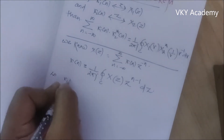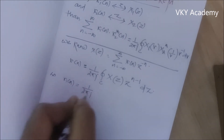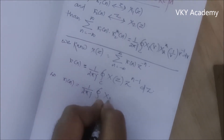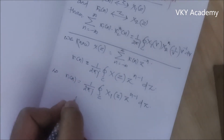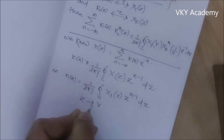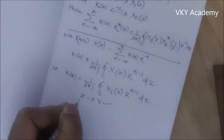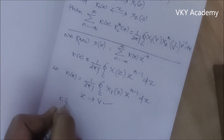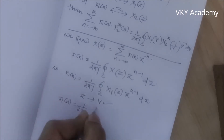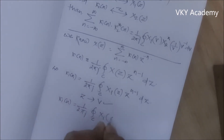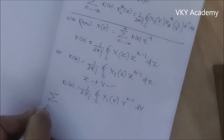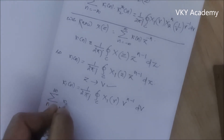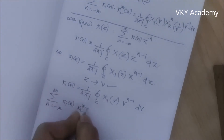So X1(N) will be 1 by 2πj times the contour integral of X1(Z) · Z to the power n minus 1 dZ. Changing the variable Z to V, X1(N) equals 1 by 2πj times the contour integral of X1(V) · V to the power n minus 1 dV. Now the LHS of Parseval's theorem is the summation from n equals minus infinity to infinity of X1(N) · X2*(N).